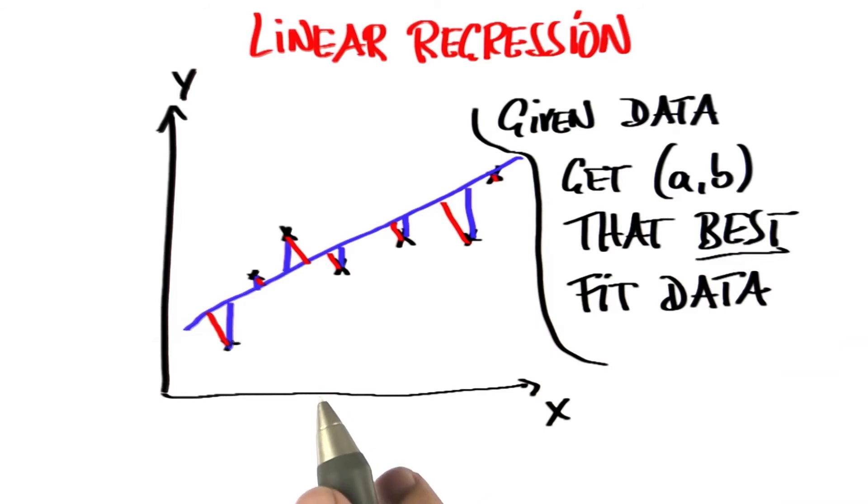But in linear regression, it turns out that we're minimizing the distance just in the y direction. And there's a lot of theory why this is a good idea.